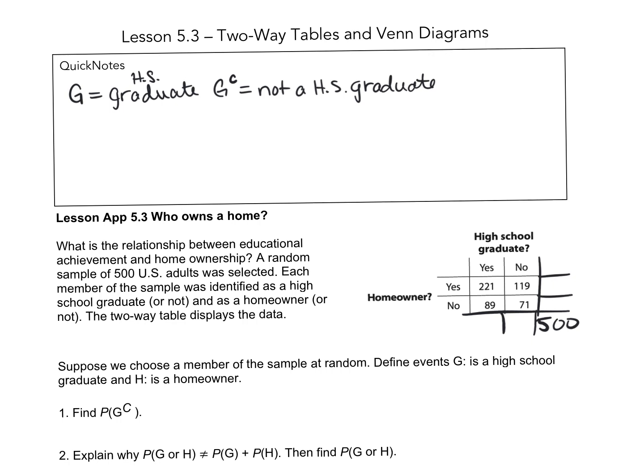When you look at the table, we're only concerned with the total column at this point. We just want to know how many out of the 500 are not high school graduates. So we look at our totals. This is 190, right? 190 students are not high school graduates and 310 are high school graduates.